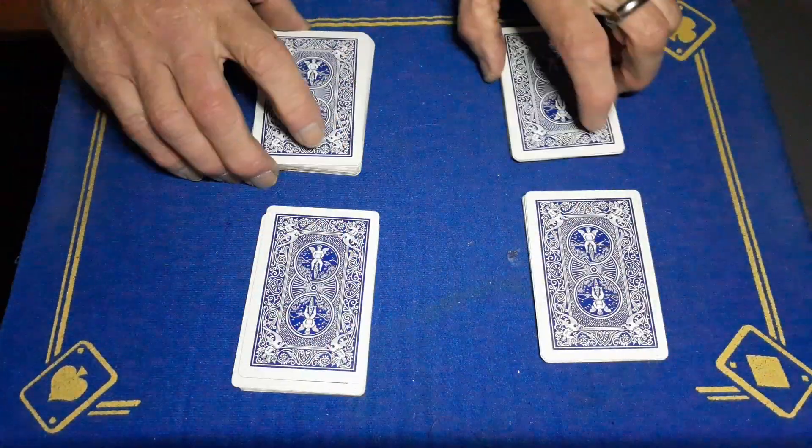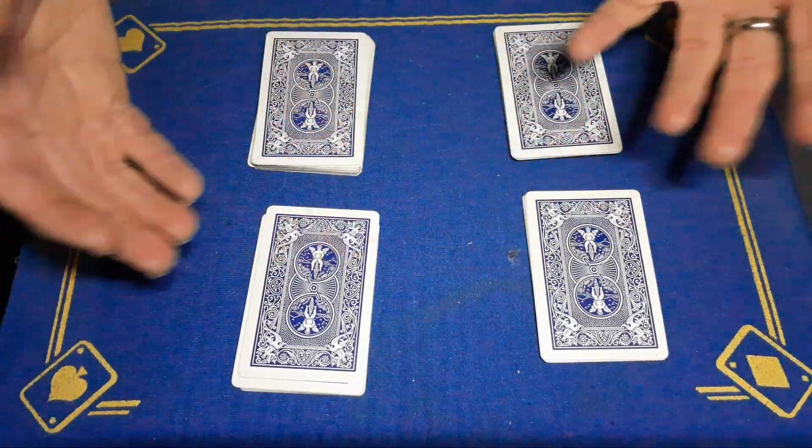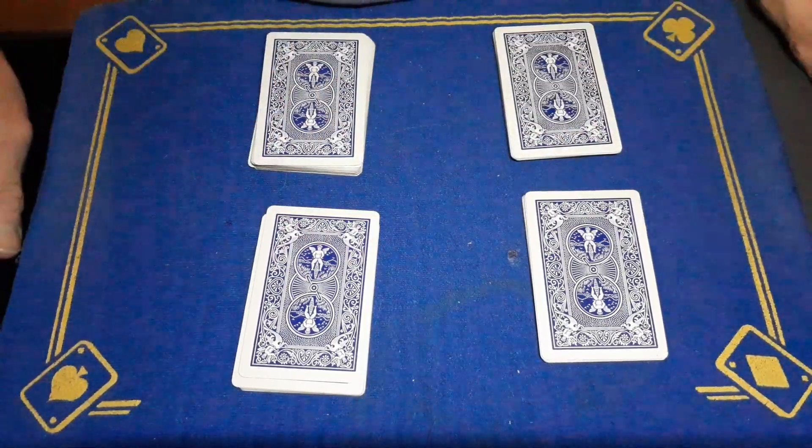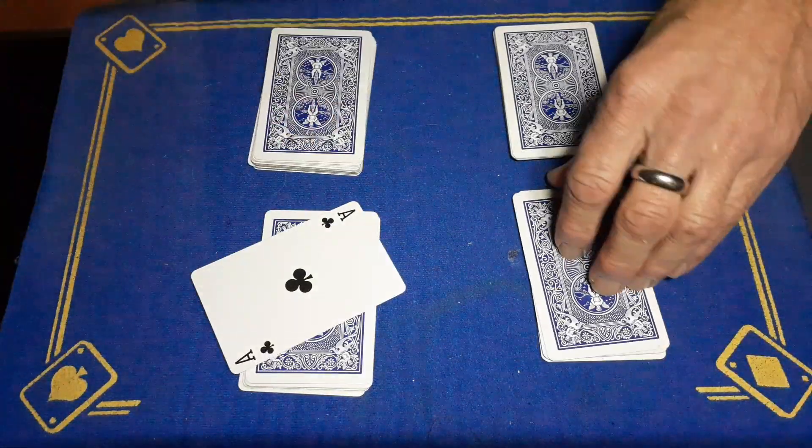So the cards were shuffled at the beginning. You saw me shuffle them, cut them. They were then shuffled into four piles. The spectator had a free choice to cut whichever pile they wanted, and as if by magic you cut to the four aces.